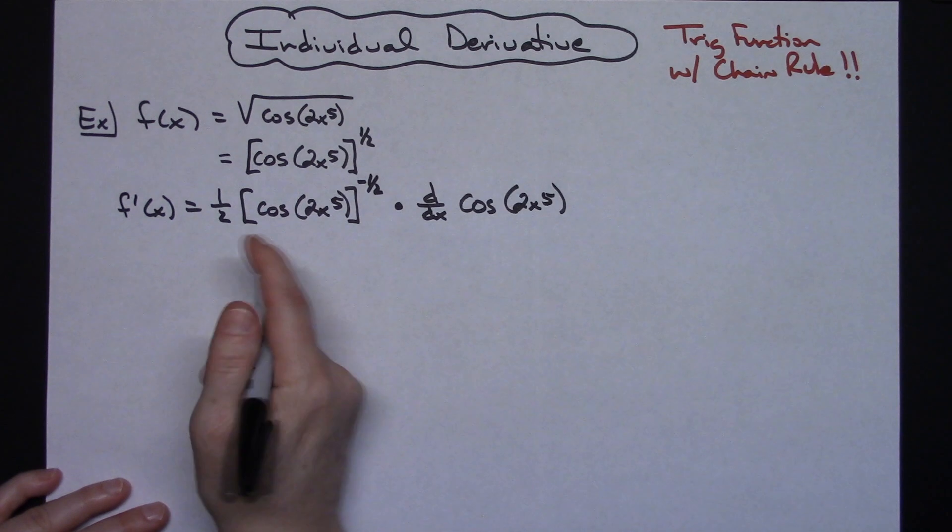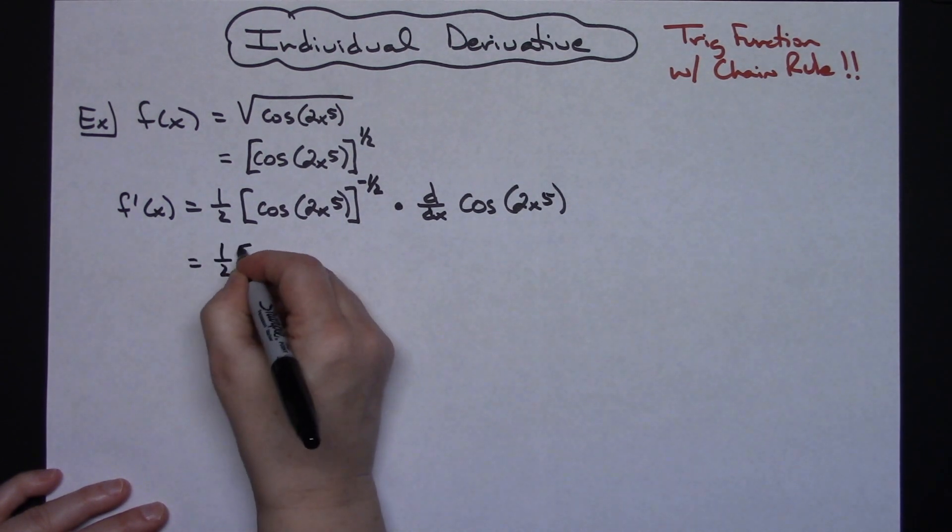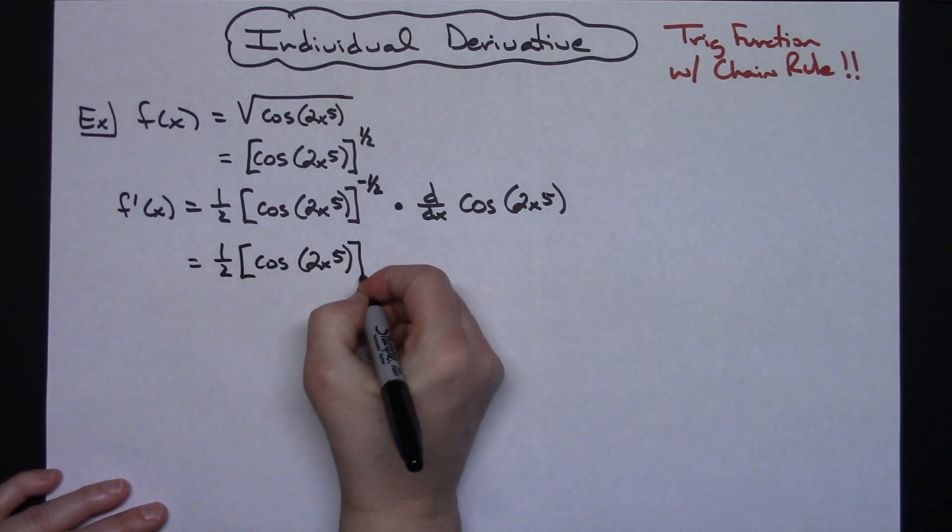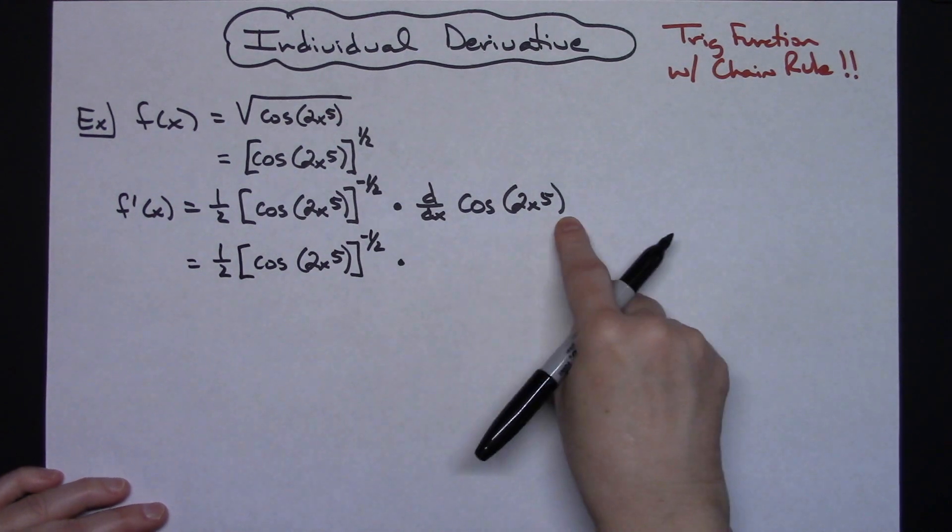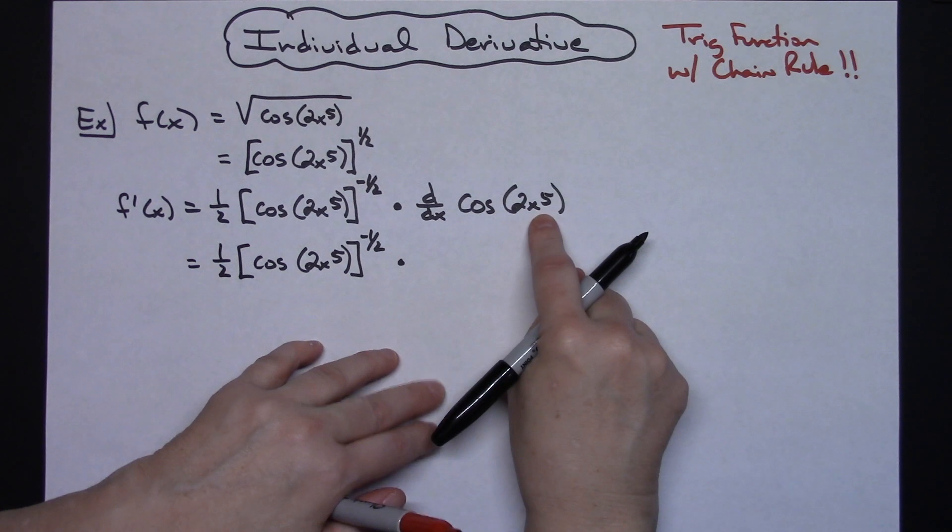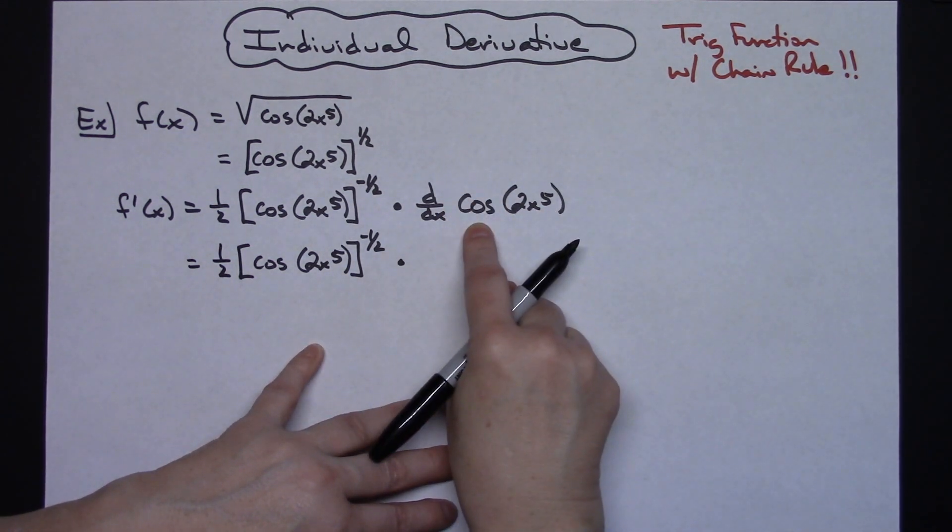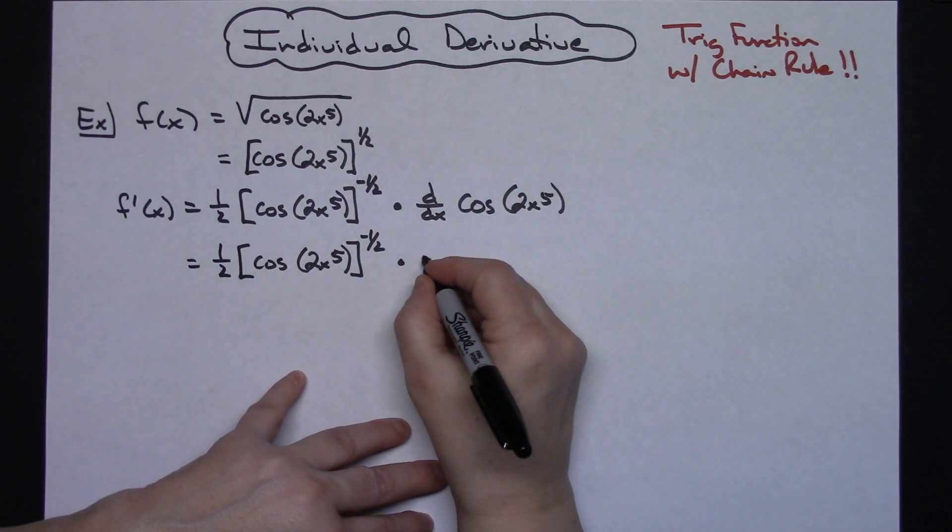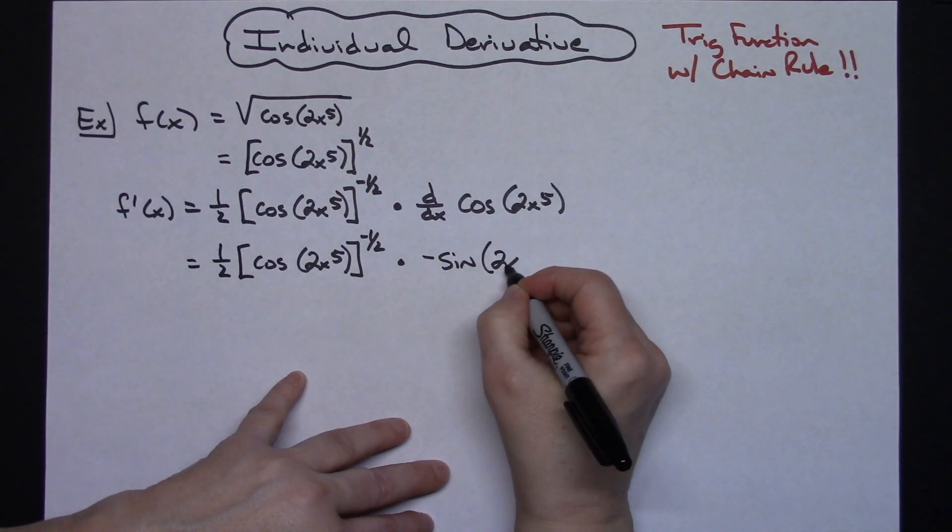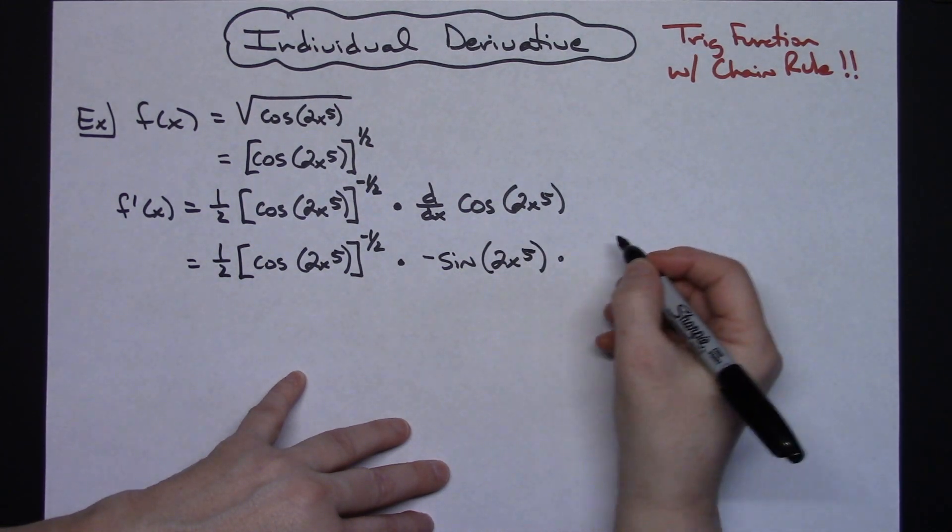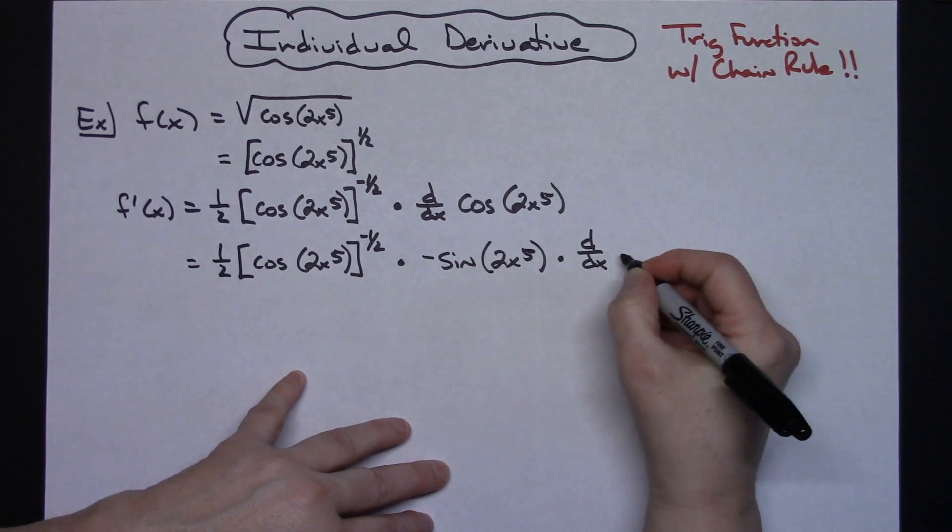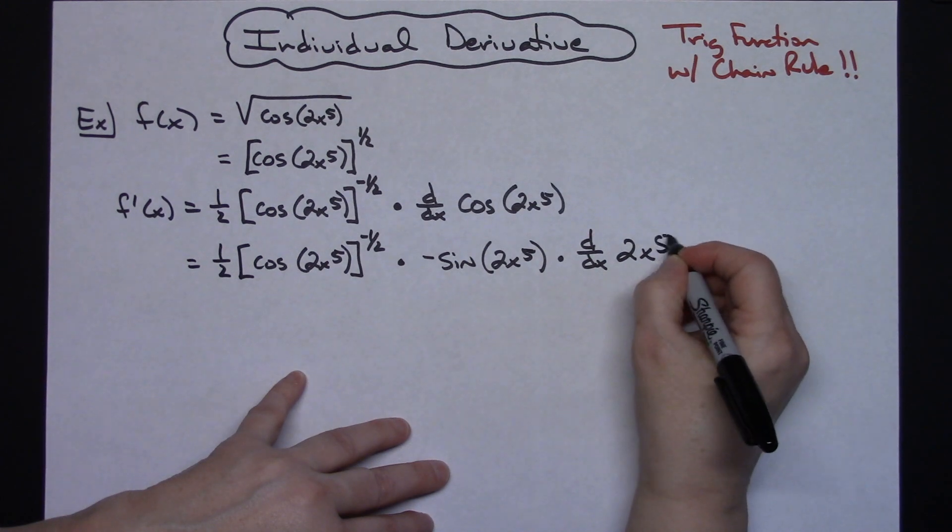On the next line nothing is going to change here at the beginning, so I'll still have the 1 half, I'll still have cosine 2x to the fifth and then to the negative 1 half power. Now I'm going to focus on the derivative here. Again I have an outside function and an inside function. So I'm going to take the derivative of the outside function, so the derivative of cosine is going to be minus sine. I'm going to leave the inside function alone, 2x to the fifth, and then I'm going to multiply it by the derivative of the inside, so there's another chain. So d dx of 2x to the fifth.